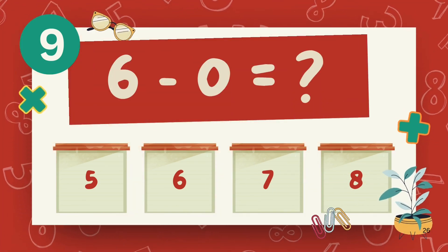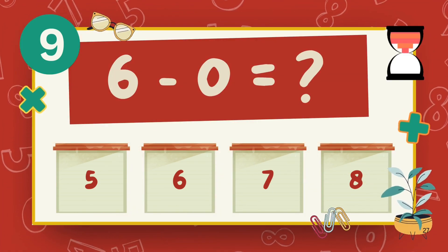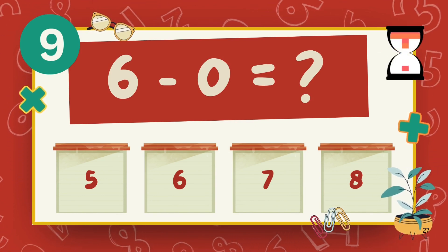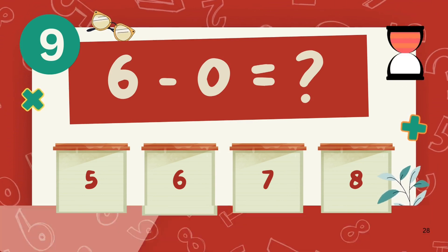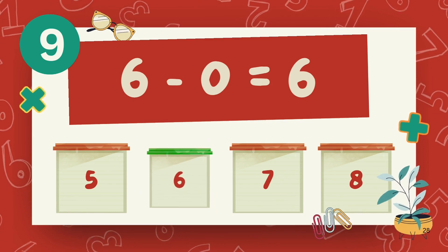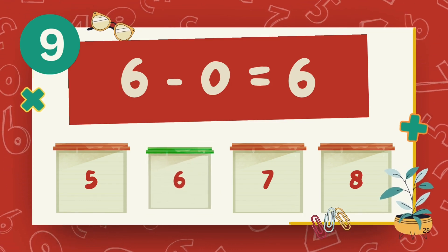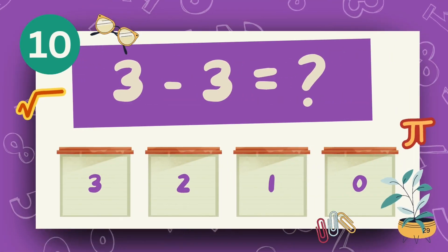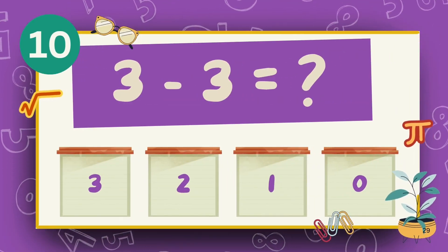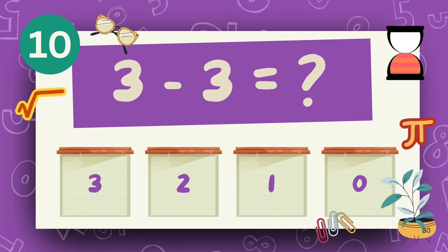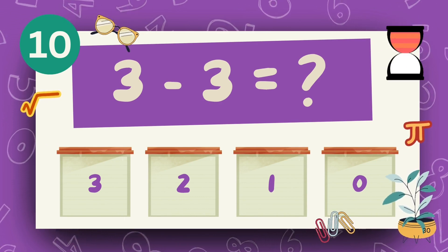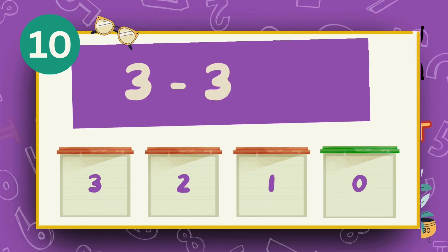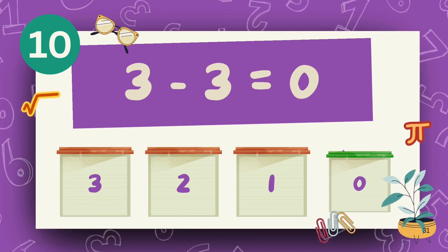What is 6 minus 0? The answer is 6. What is 3 minus 3? The answer is 0.